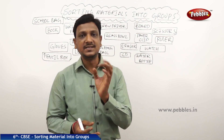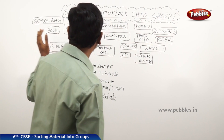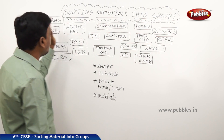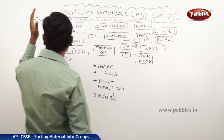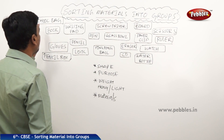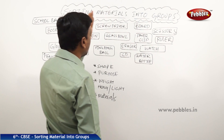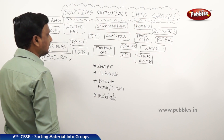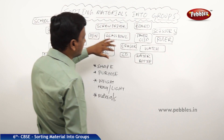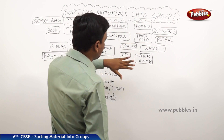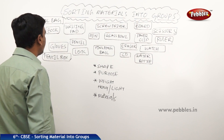So that is the necessity of grouping. We have written so many items here on the board: school bag, book, writing pad, pen, screwdriver, board, scissors, glass bowl, paper clip, ruler, pencil, ping pong ball, eraser, CD, watch, water bottle, pencil box, and gloves. All these are different items, and somebody asked you to group them.